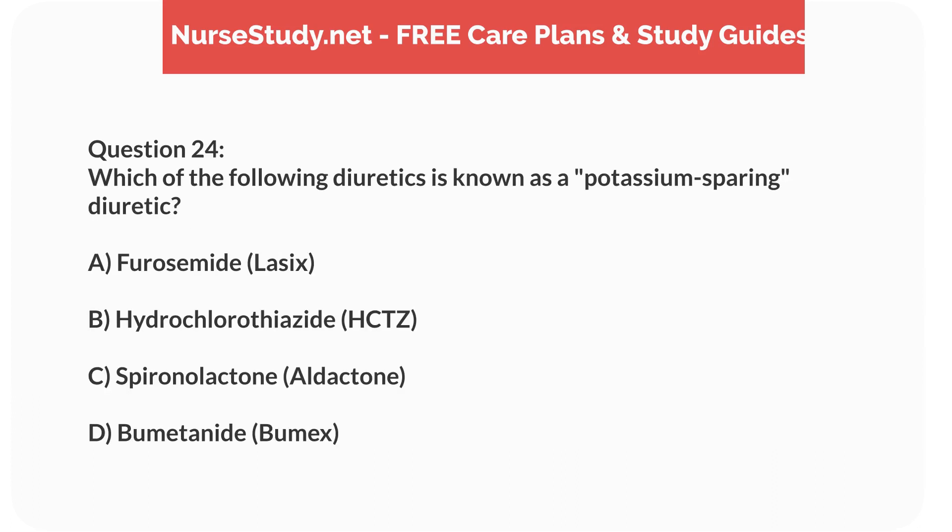Question 24. Which of the following diuretics is known as a potassium-sparing diuretic? A. Furosemide (Lasix). B. Hydrochlorothiazide (HCTZ). C. Spironolactone (Aldactone). D. Bumetanide (Bumex).